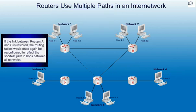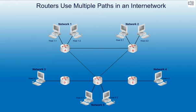If the link between routers A and C is restored, the routing tables would once again be reconfigured to reflect the shortest path and hops between all networks.